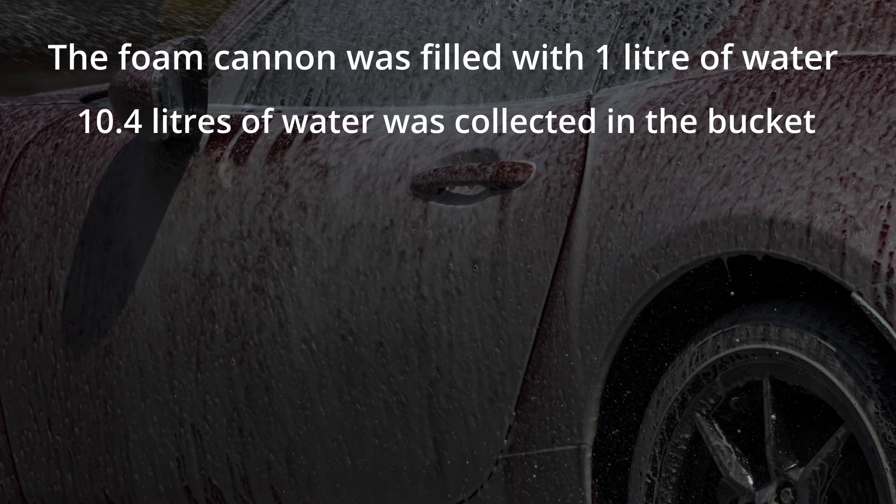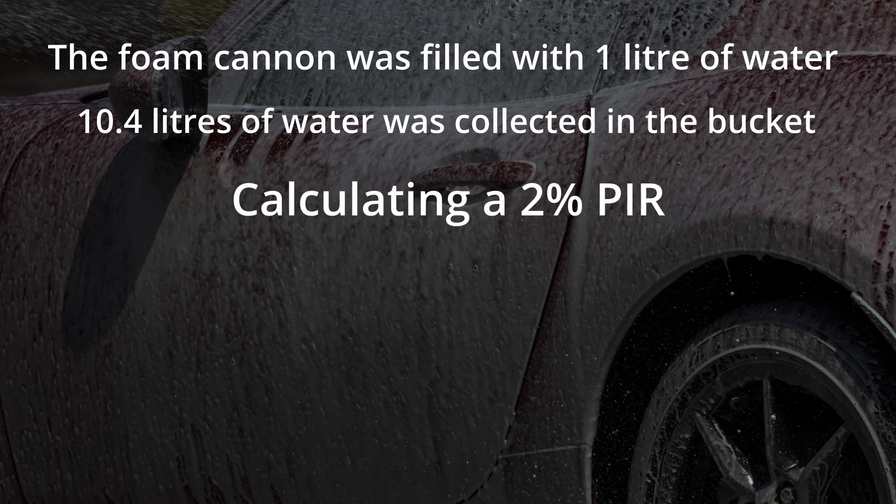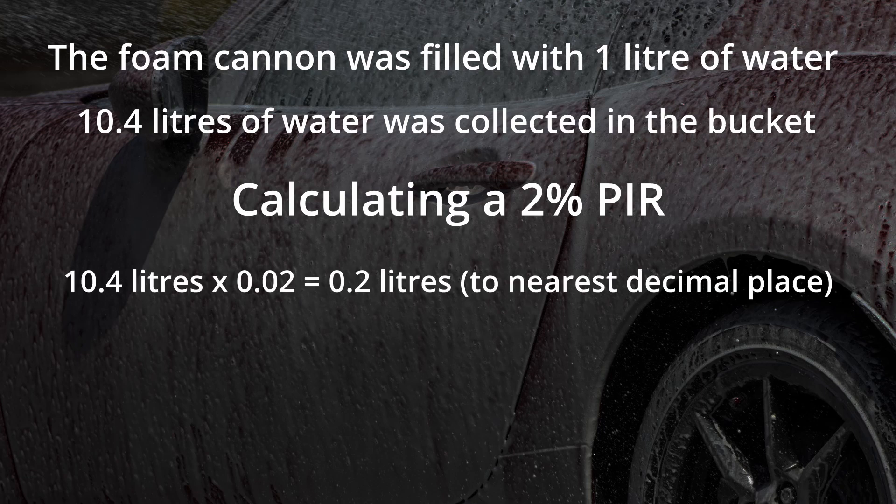In this example the foam cannon dispensed 10.4 liters of water. So if I wanted to work out a two percent panel impact ratio, all I'd need to do is multiply that 10.4 by 0.02 to get two percent of the total volume dispensed. Equally, if you're trying to work out a four percent PIR, you'd do 10.4 × 0.04.